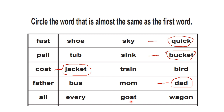Now the last one — 'all.' What will come for all? Is it 'goat'? No. 'Wagon'? No. It's 'every'! All itself means every — 'all are invited' and 'everyone is invited' mean the same thing. So we give a hyphen to indicate the meaning — all means every.